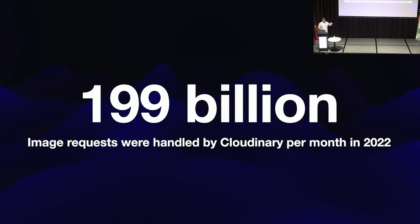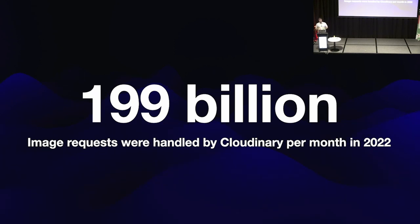At Cloudinary, we also do lots of image optimization and delivery, and we created our own report. We found that on average last year we handled 199 billion requests for images per month — and that actually excludes requests for videos. So clearly, there's a lot of traffic going on in terms of images.